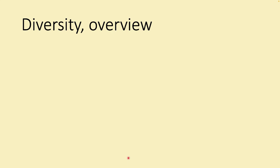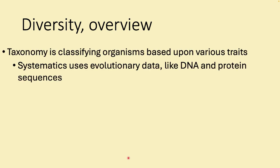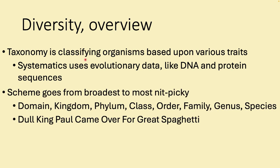When looking at diversity, it helps to review how taxonomy works — taxonomy is how you classify organisms. A newer branch called systematics uses evolutionary information like DNA and protein sequences to place organisms into evolutionary categories. Carl Linnaeus developed the classic taxonomy scheme: kingdom, phylum, class, order, family, genus, and species, with domain added since as the broadest level.